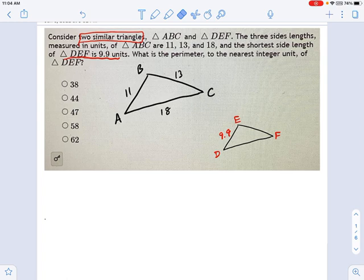I'll do it the other way first. I'm going to call this side over here X, and I'm going to say that the ratio of these two triangles is constant because they are similar triangles. So that means 11 divided by 9.9 is the same as 13 divided by X. See how those are corresponding sides?